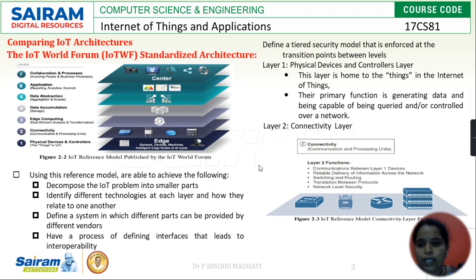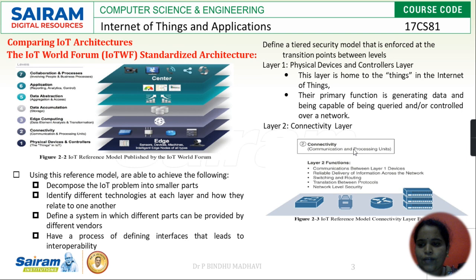Comparing IoT architectures — as I mentioned there are three architectures. The next one is the IoT World Forum, which is a standard architecture. There are seven layers and we can also call it a reference model, like OSI ISO. The scenario will be from bottom to top fashion: physical devices, connectivity, edge computing, data accumulation, data abstraction, application, and collaboration and process. Usually this model behaves differently at different levels as per the role played by that particular layer.